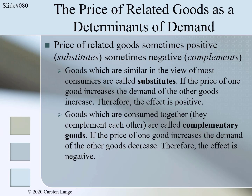Here is another determinant to analyze in more detail: the price of related goods. The influence of prices of related goods is sometimes positive and sometimes negative. When we analyzed Pepsi-Cola, a price increase of the related good Coca-Cola would increase the demand for Pepsi, because most people consider the two goods similar and can substitute one for the other — these goods are called substitutes. In general, if the price of a substitute increases, the demand for the other good increases too, because demand shifts from the now more expensive good to the relatively less expensive one.